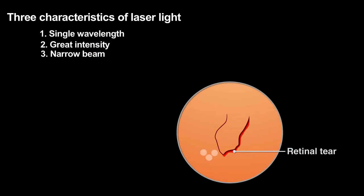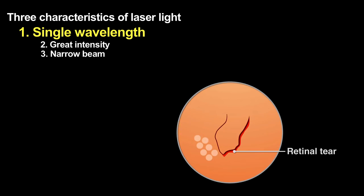Surgeons use green laser light of nearly a single wavelength because that color passes through the eye's lens and vitreous humor without being strongly absorbed, and thus without causing damage.